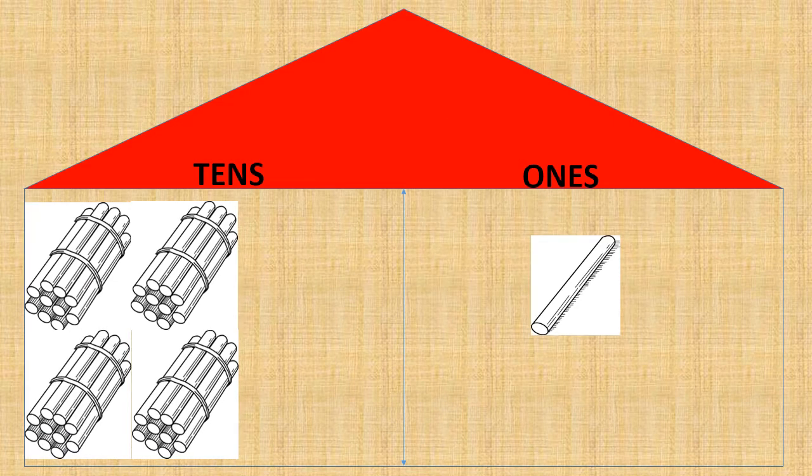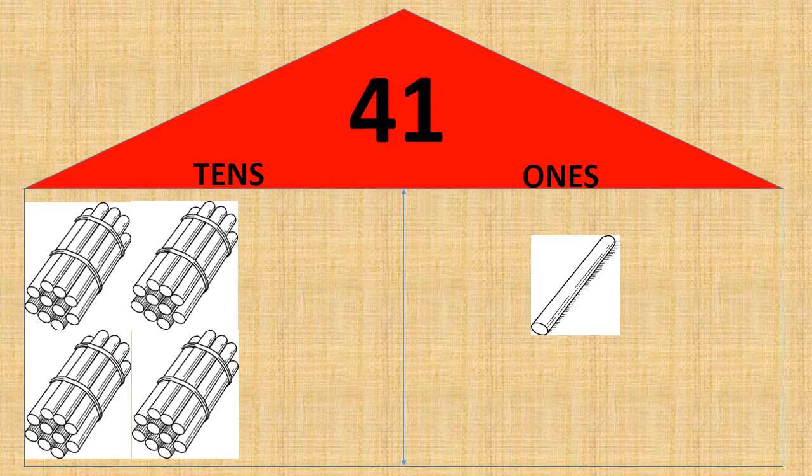Now let's count the tens and ones. In tens, we have one, two, three, four — four bundles of tens. And in ones place, we have only one. So four tens and one one gives us the number forty-one.